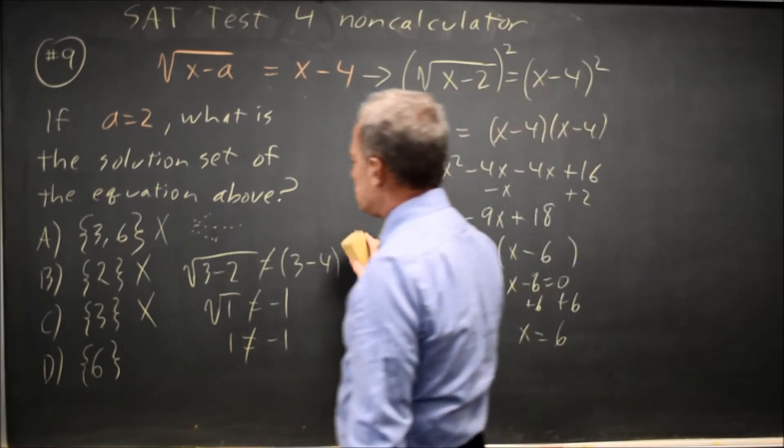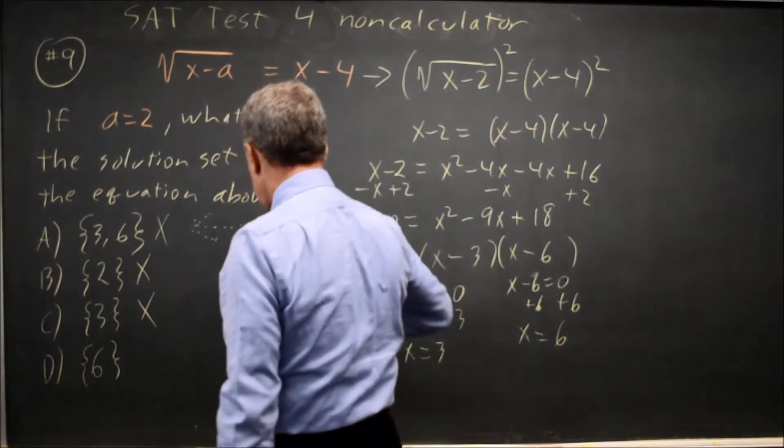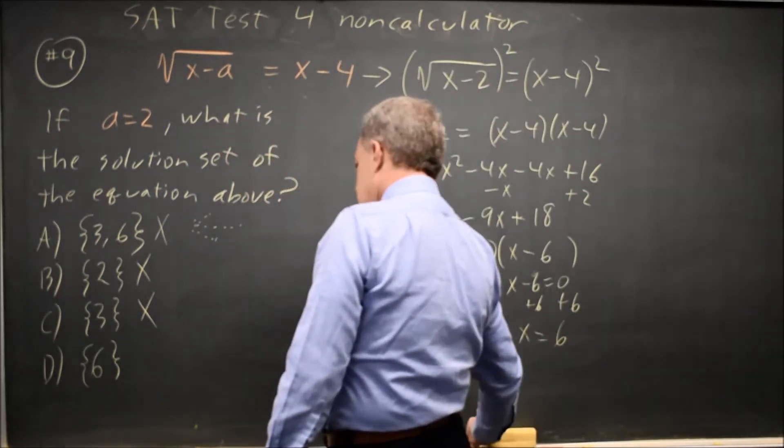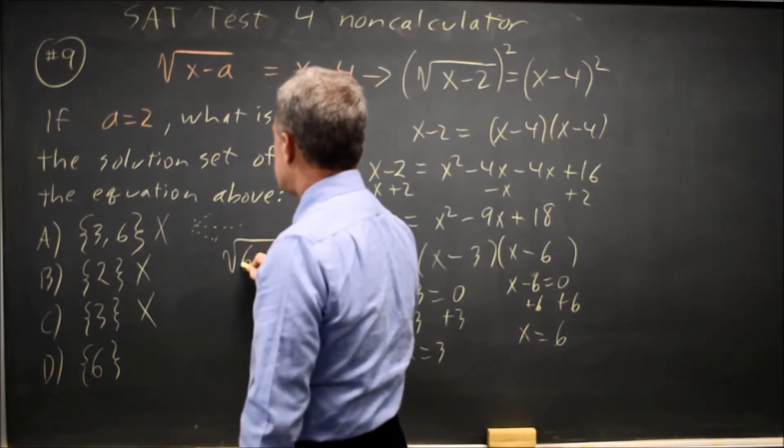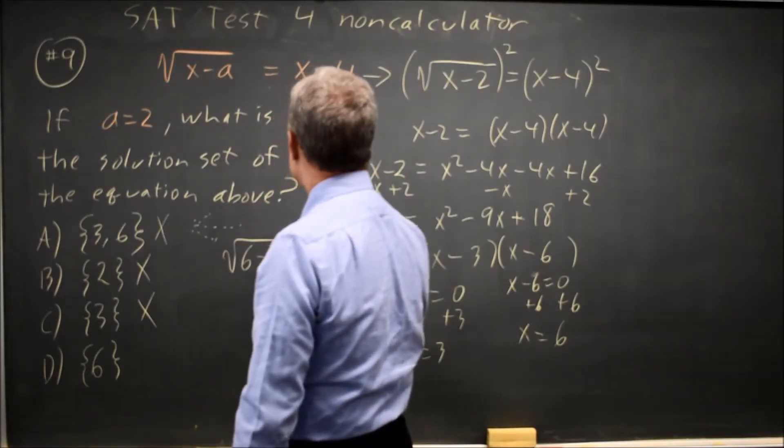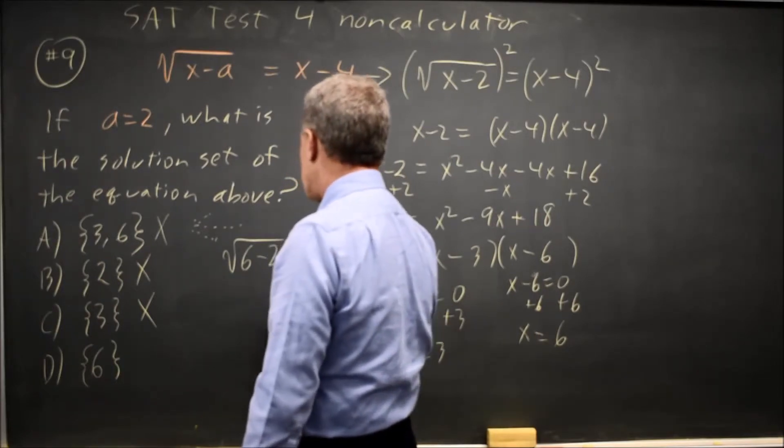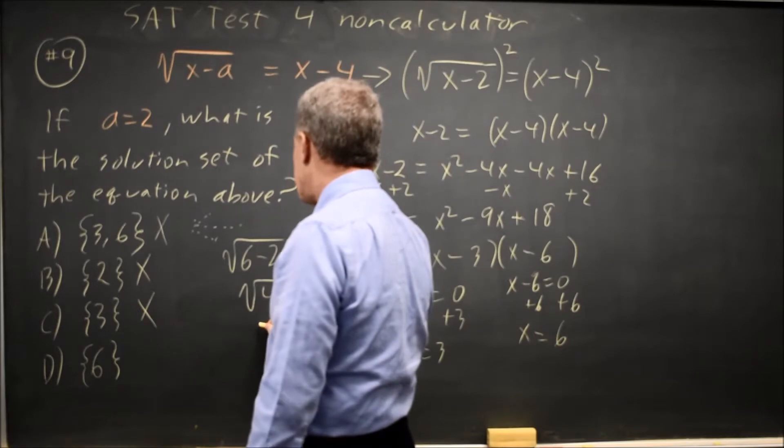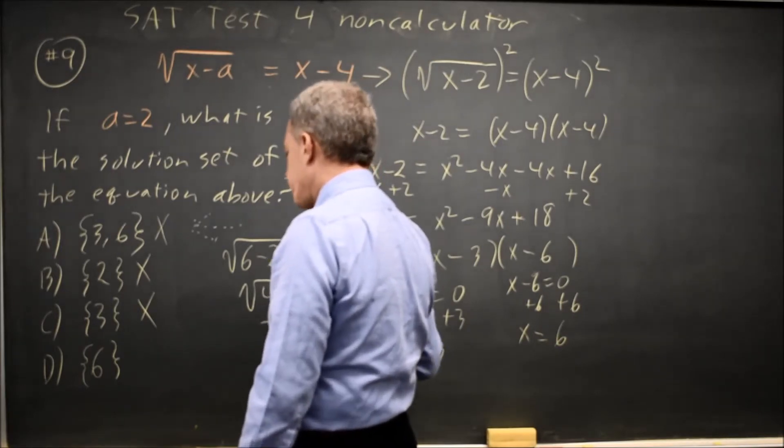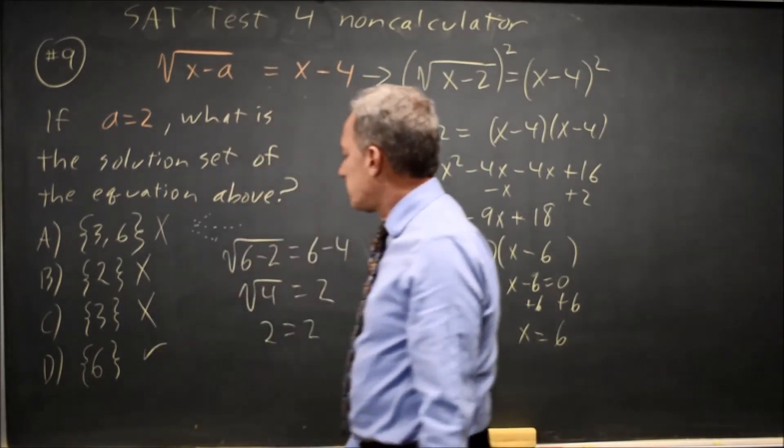Does 6 work? Square root of 6 minus a is square root of 6 minus 2, because a is 2, equals 6 minus 4. That's root 4 on the left, 2 on the right, and square root of 4 is positive 2. 6 is the only number that works.